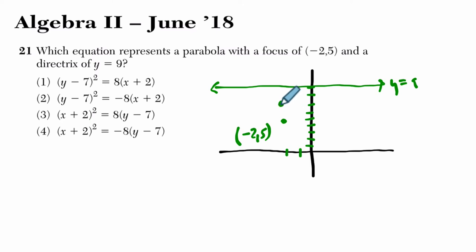It's on the same vertical line as the focus, but it's halfway between. So this distance right here is 2, and so is this, right?